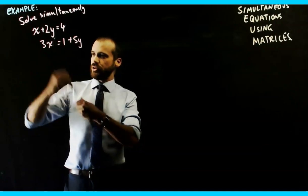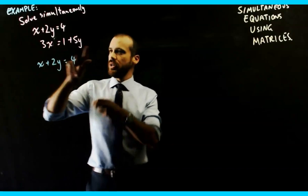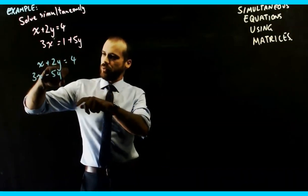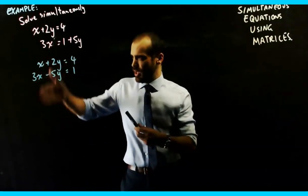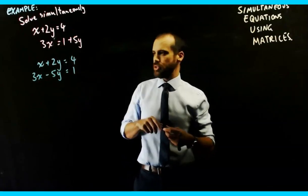So I'm going to rewrite those two as x plus 2y equals 4 and the next one as 3x minus 5y equals 1. You need to have it in this form with x, y equals, and then the constants on the other side.